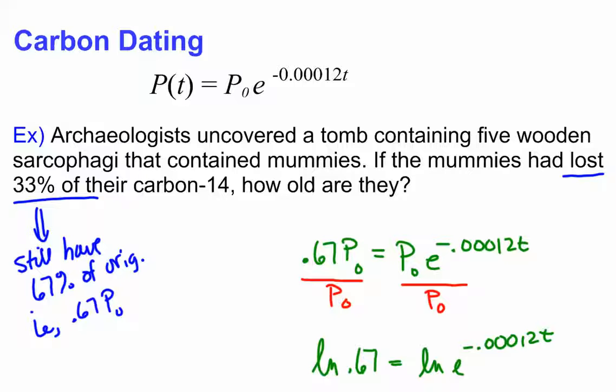Now this is actually based on the half-life of carbon. That's the amount of time it takes for half of carbon to be present from what it initially started as. Here's our formula. It says P of T is equal to P sub zero, which is the original amount of carbon, times E to the negative .00012T.